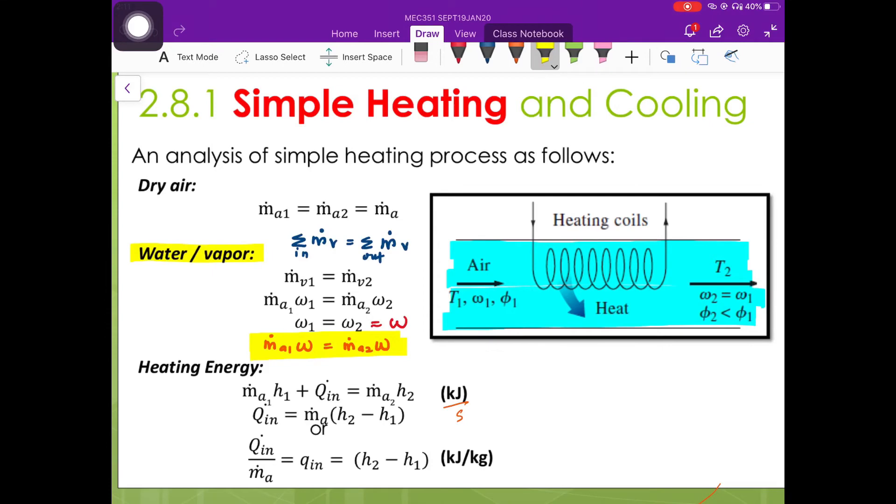For the energy balance, the terms ṁ·h represent the energy of flowing fluid. Therefore, if we are having a flowing fluid through our channel, we are going to have the terms ṁ·h at the inlet and the outlet. For simple heating, the heat is being supplied to our system, which is inside the channel.